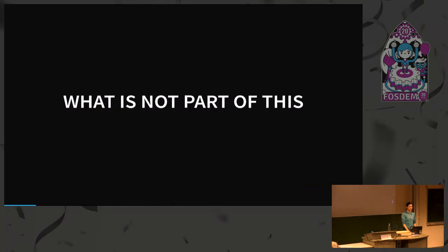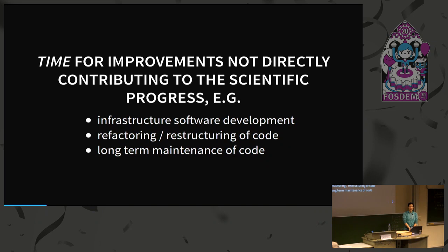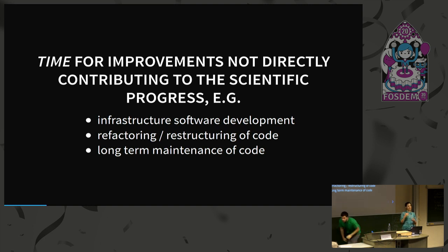So what are the differences compared to software development in business or other projects? In science, since publication is the currency, people usually have a time issue — the time they can invest for software development. And this software development, if it is done, is typically targeted directly at scientific outcomes: plots for paper publications and so on.